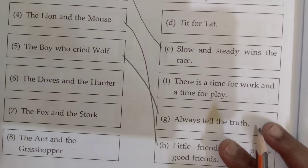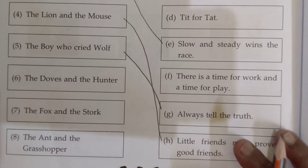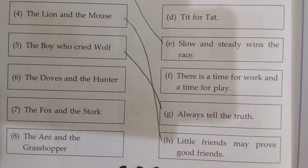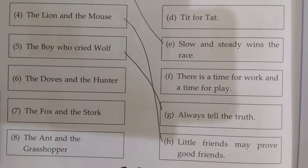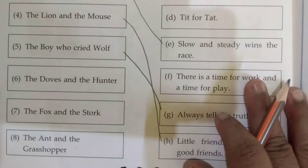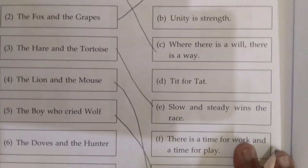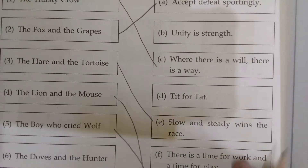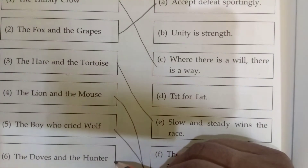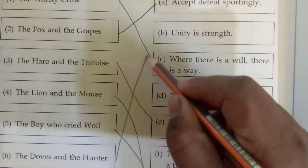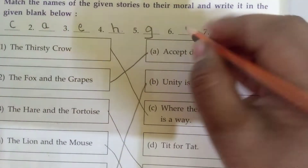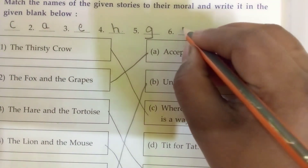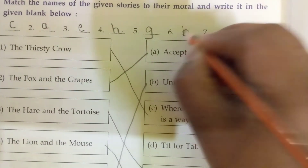Next, The Dove and the Ant — the moral is 'Unity is strength.' Here we will write B.